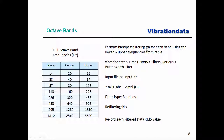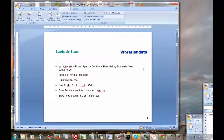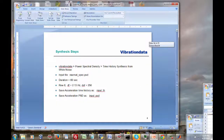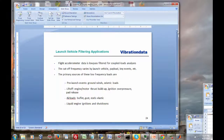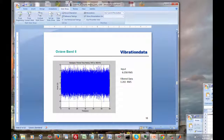We're going to perform bandpass filtering for each band using the upper and lower frequency limits with our Butterworth filter from the previous webinar. I'll go to our Butterworth filter and use the synthesized acceleration time history as input — I've called it accel_TH in the class version. In the slide version it was called input_TH, but that shouldn't be a problem as long as we take note of that.